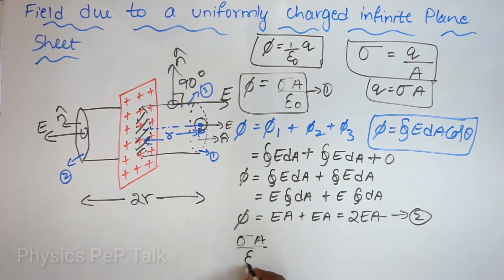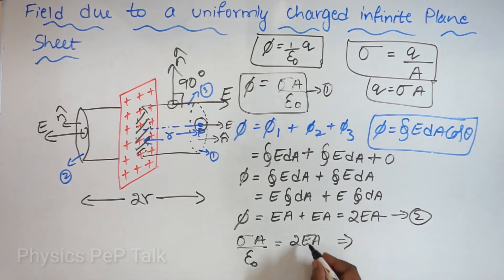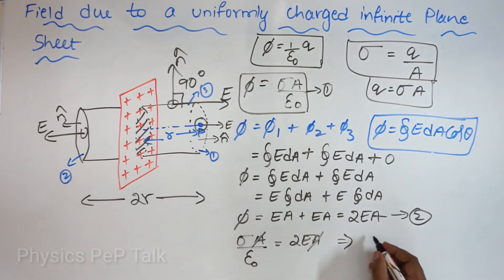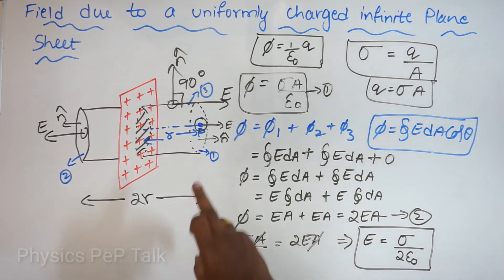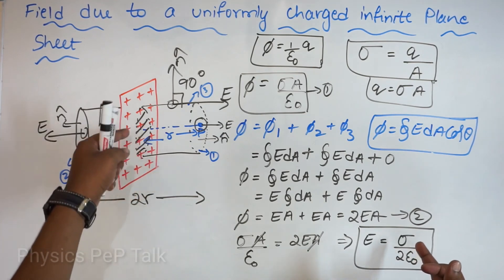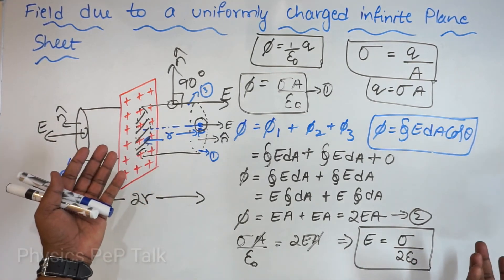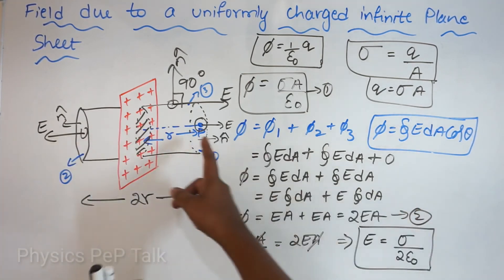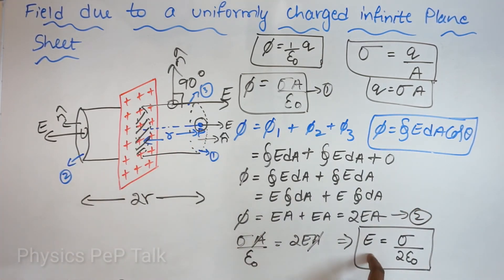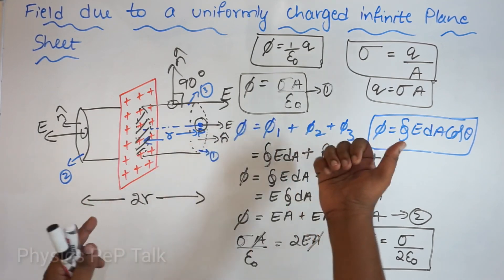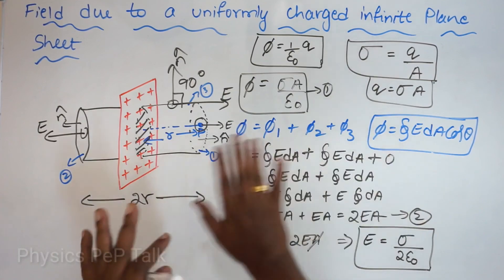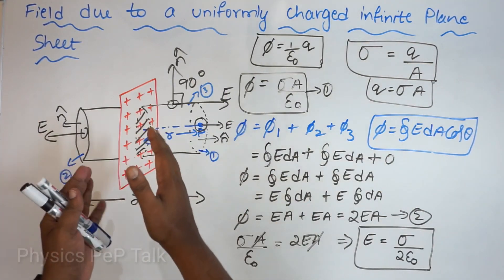Equating equation 1 and equation 2: sigma A by epsilon naught equals 2 times E times A. Cancelling A on both sides, E becomes sigma by 2 epsilon naught. The electric field intensity at point P is a constant — it does not depend on the distance of separation R between the metal sheet and point P.